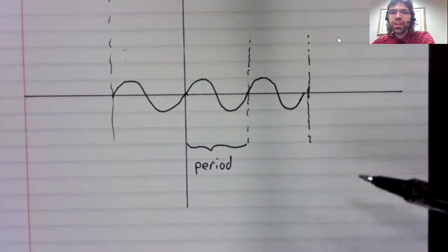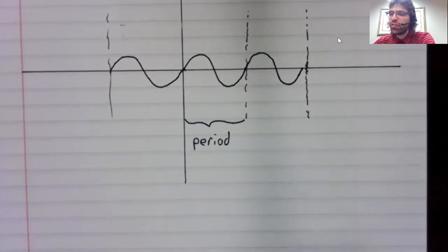And the amount of time it takes to trace this shape out once was called the period of the curve. In this case, the period of the sine function.